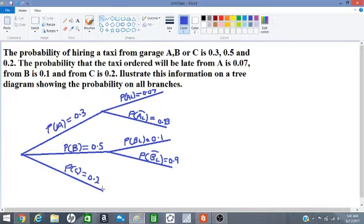Let us look at the other two branches remaining. We have probability that the taxi order will be late from C, which is PCL, 0.2, and the probability that it is not late, PCL bar, 1 minus 0.2, which is 0.8.